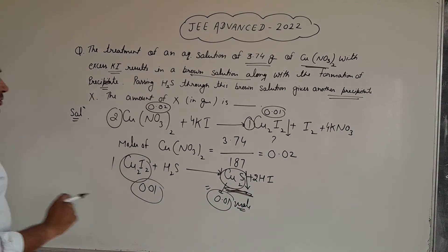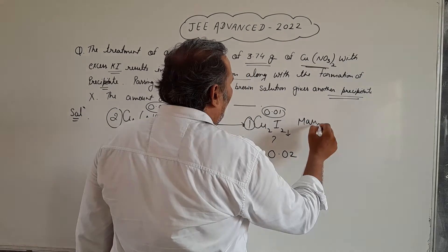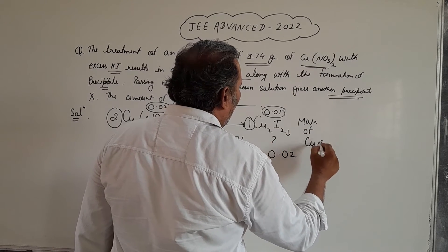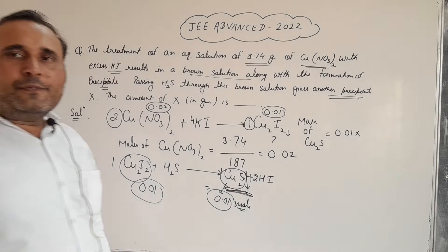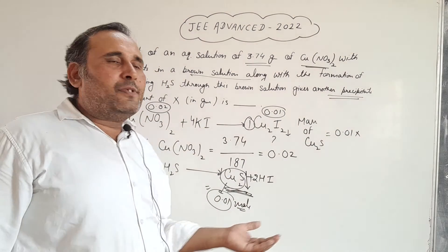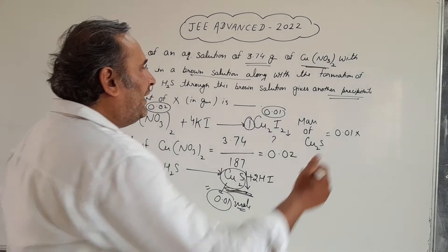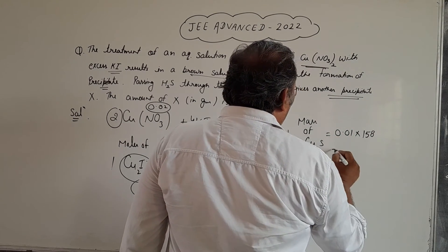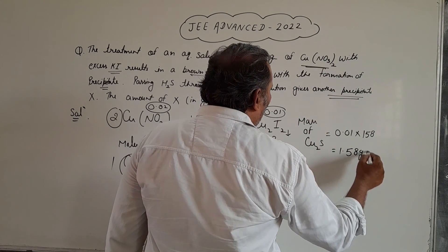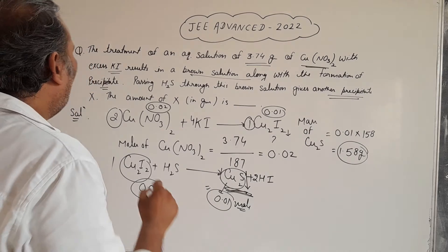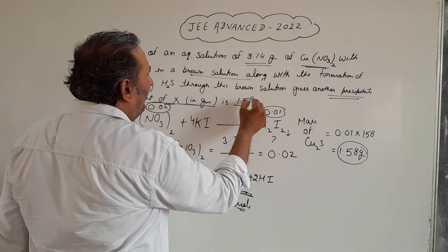So how can we find out the mass? Mass of Cu₂S precipitate equals the number of moles, which is 0.01, multiplied by the molecular weight of Cu₂S. The molecular weight of Cu₂S is 158 grams. So our answer will be 1.58 grams. That will be our final answer — the amount of Cu₂S in grams is 1.58 grams.